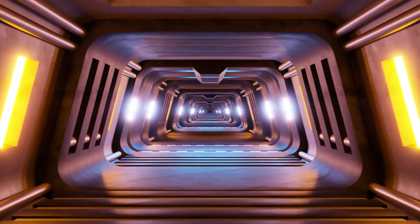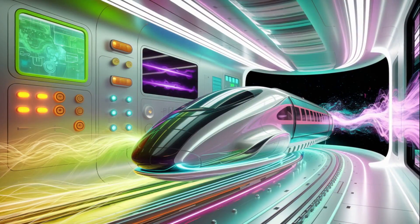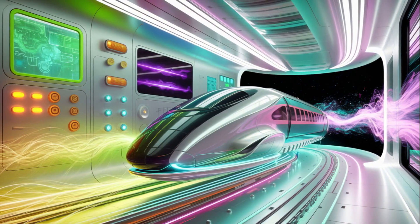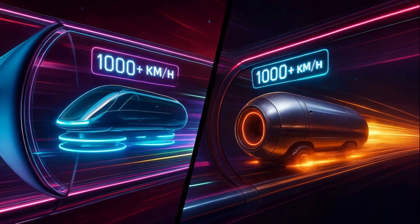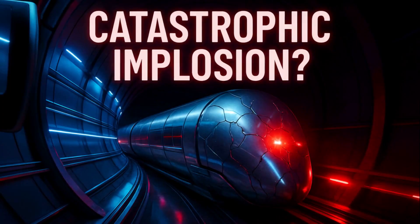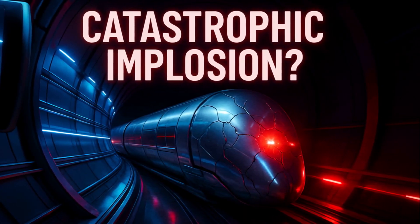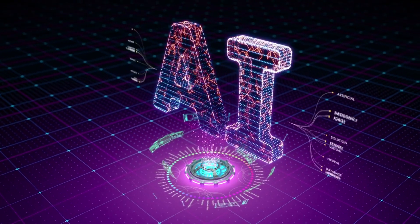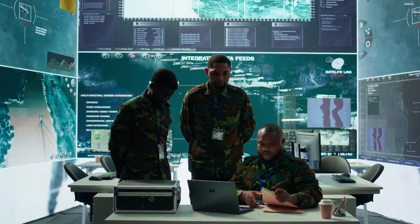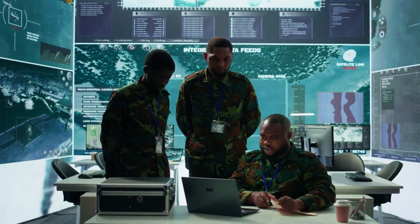Behind the glossy tech and billion-dollar promises lies a shadowy side no one is ready to talk about. Vacuum maglev trains, the sleek symbols of ultra-speed and zero-emission travel, may be hiding a darker, more dangerous side. What happens when a capsule traveling at 1,000 kilometers per hour suffers a system glitch? Inside a near-vacuum, even a millisecond delay in emergency response could mean catastrophic implosion. While corporations promise AI-based fail-safes and quantum emergency override systems, leaked documents suggest countries are scrambling to build military-grade backup tunnels, fearing weaponized sabotage.